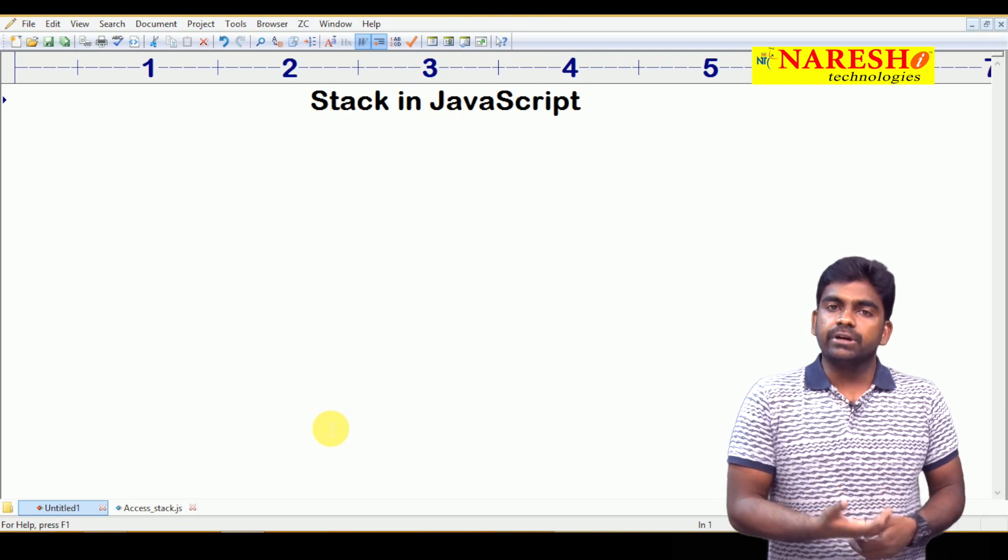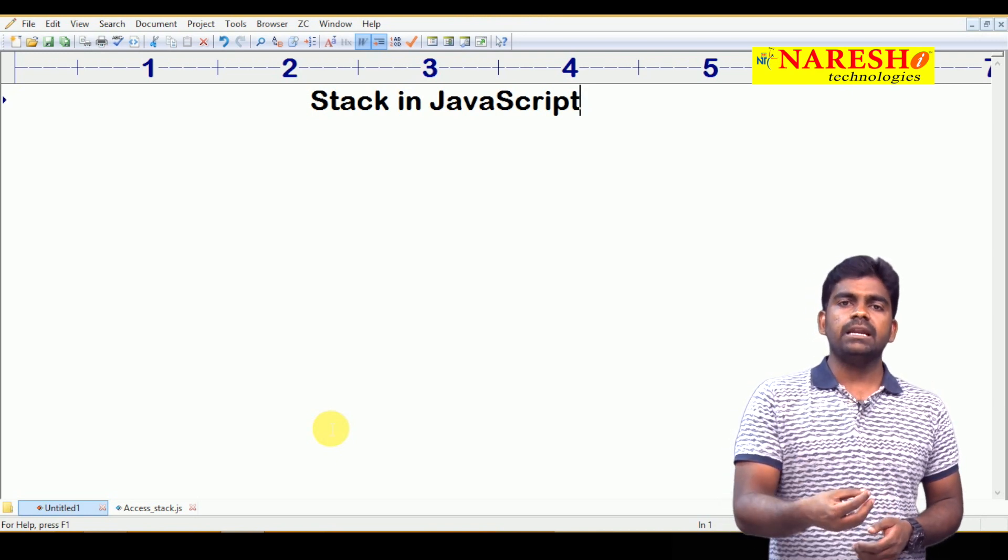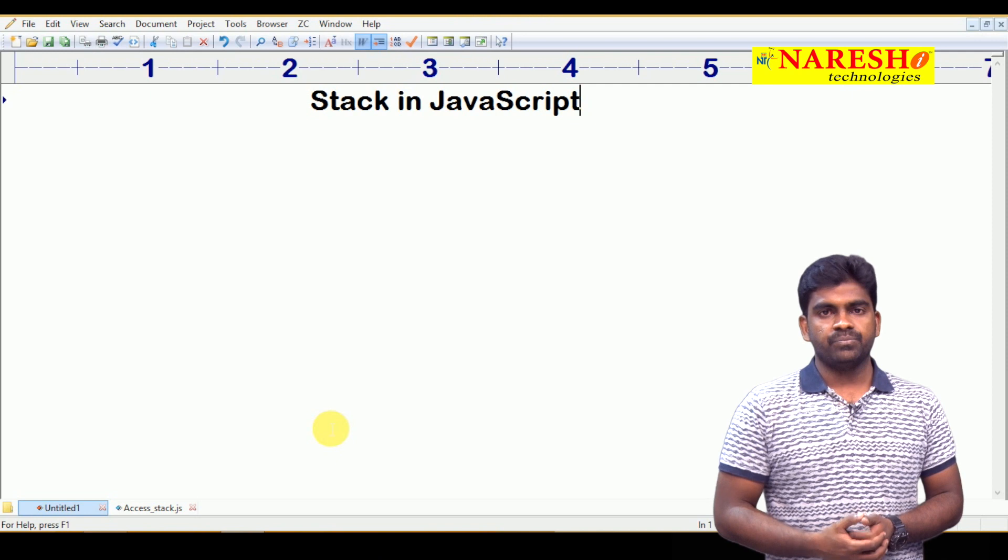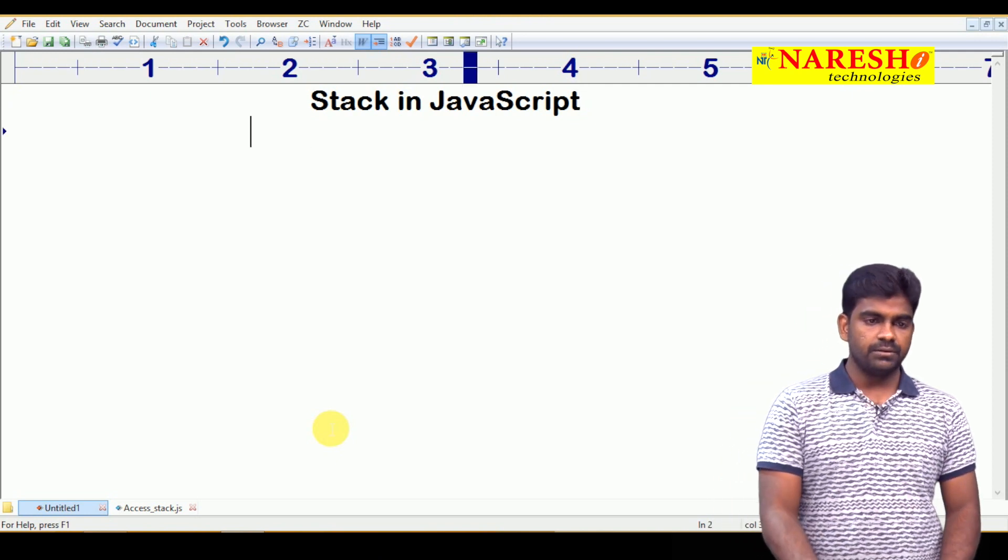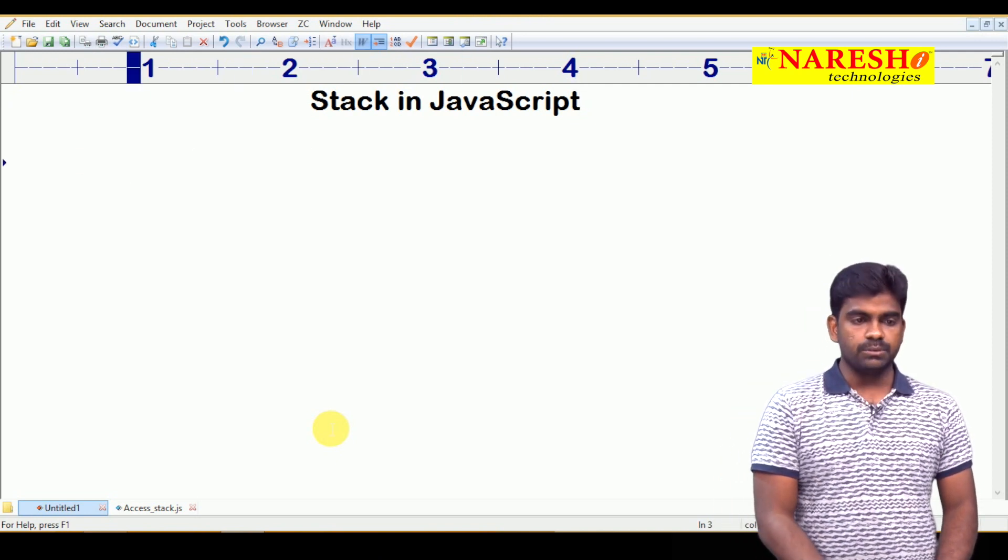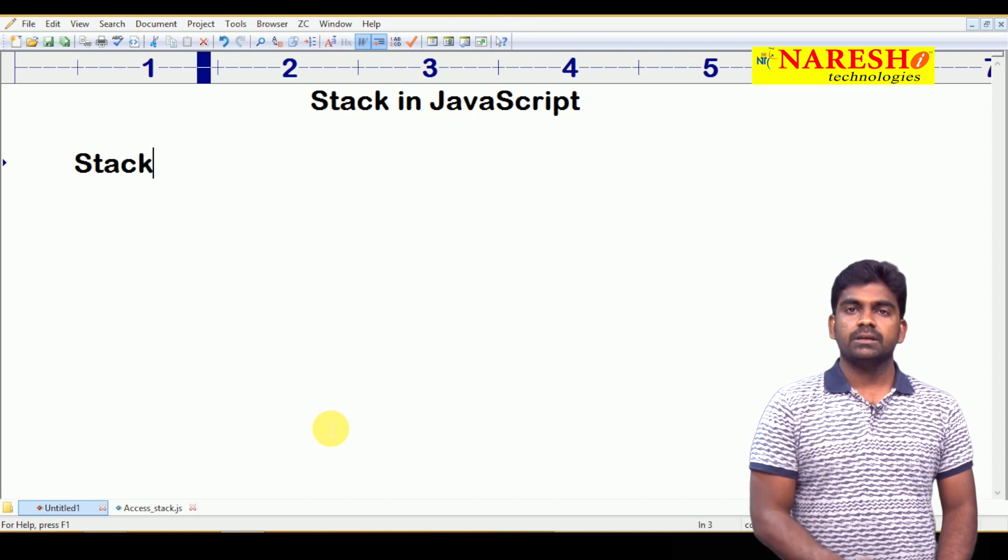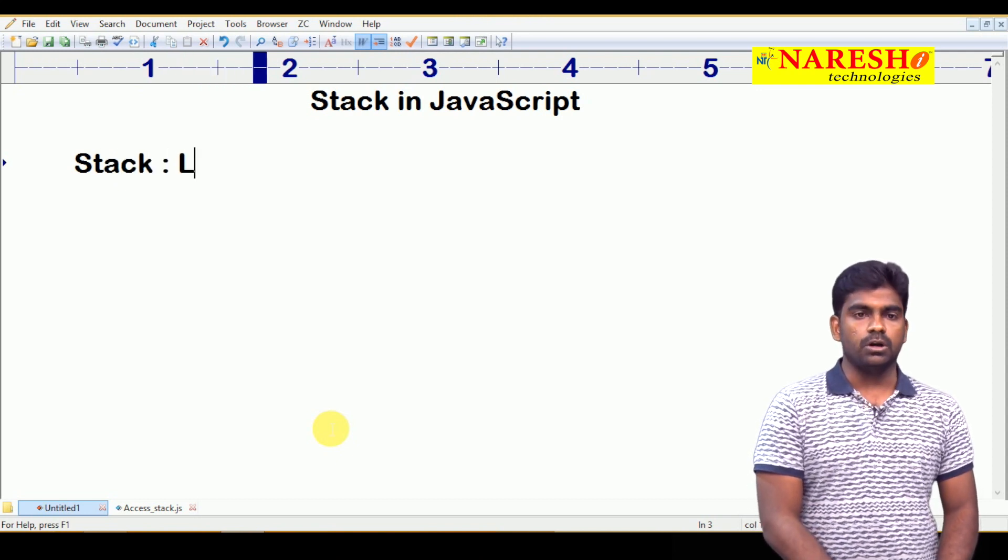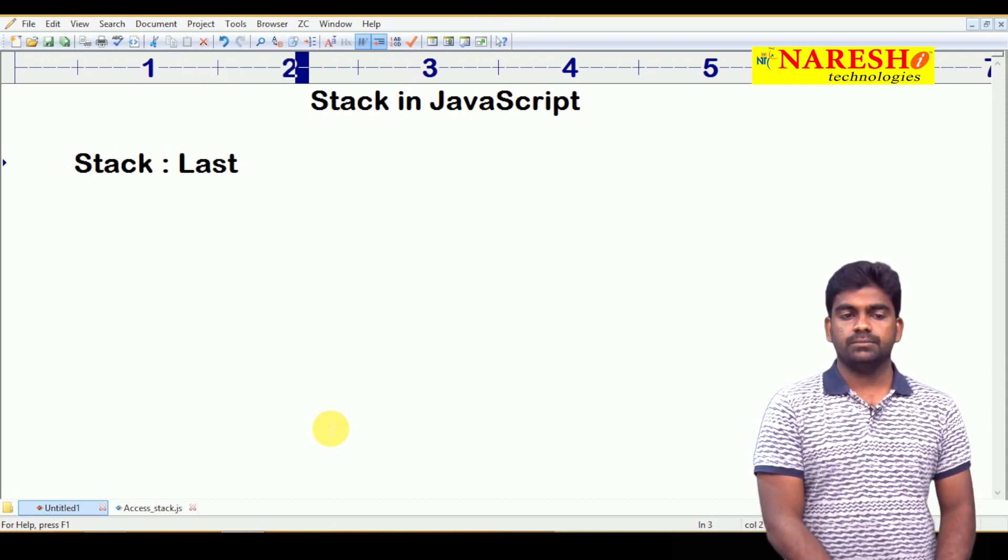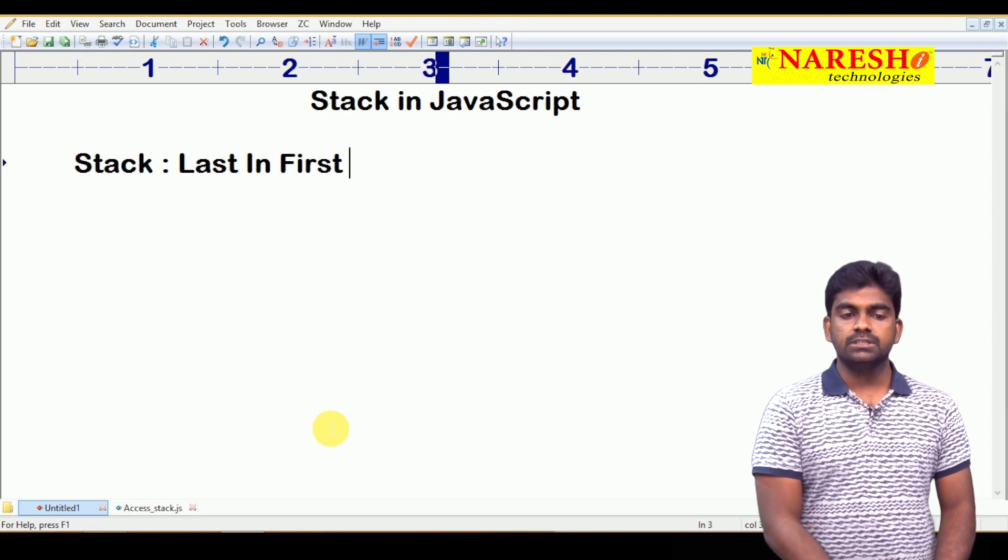Why are we storing the data in different formats? So that we can access it effectively. A stack follows a simple rule called last in first out, last in first out.